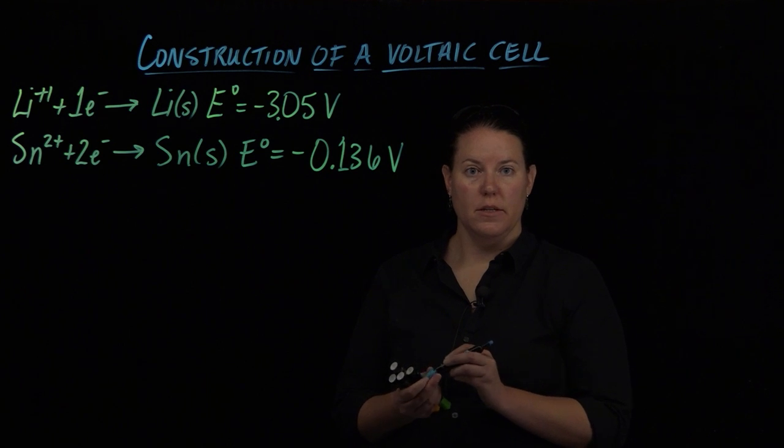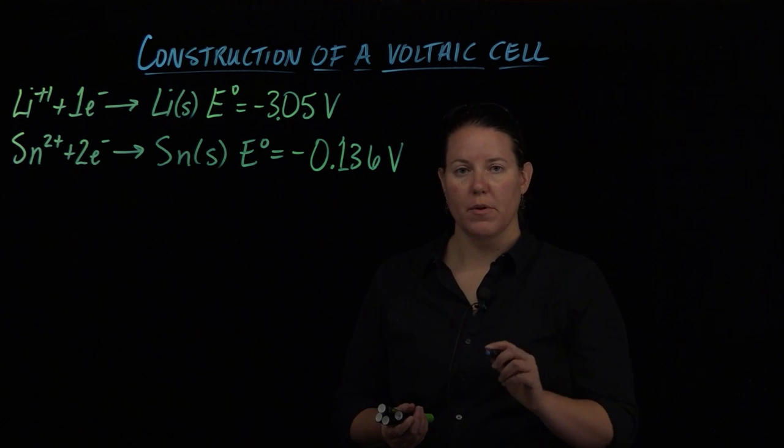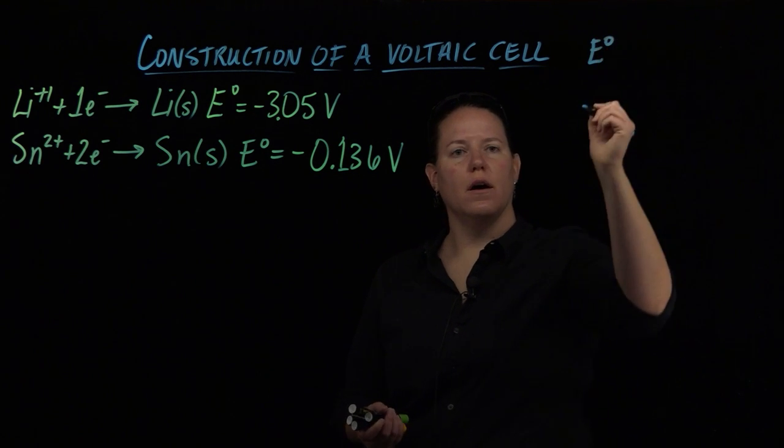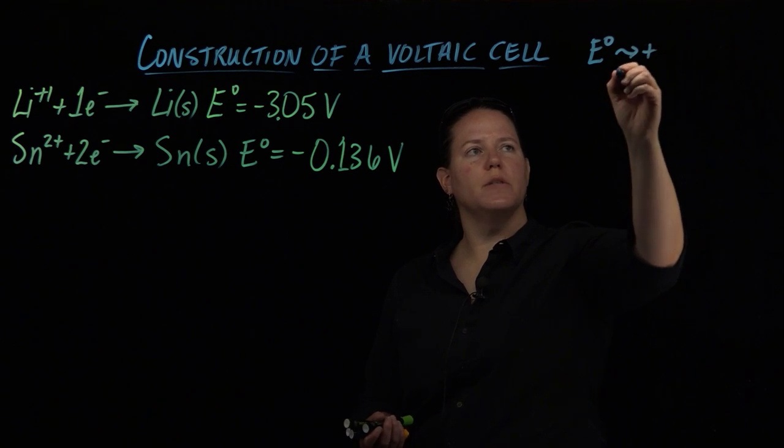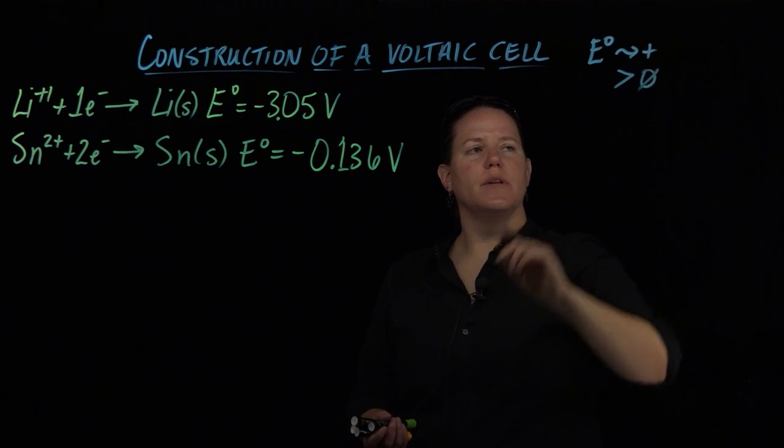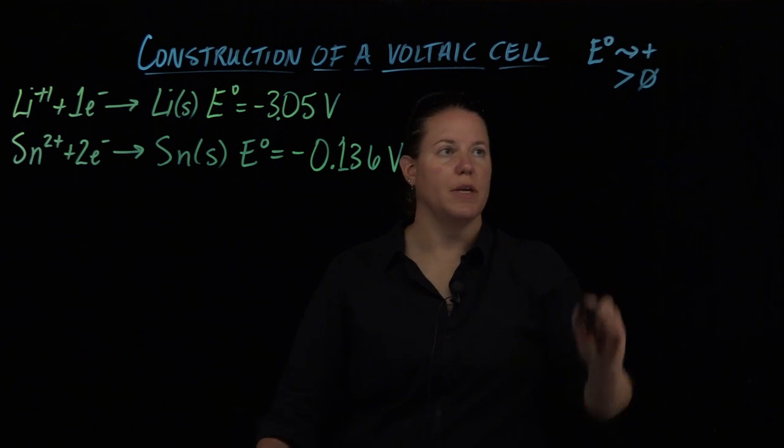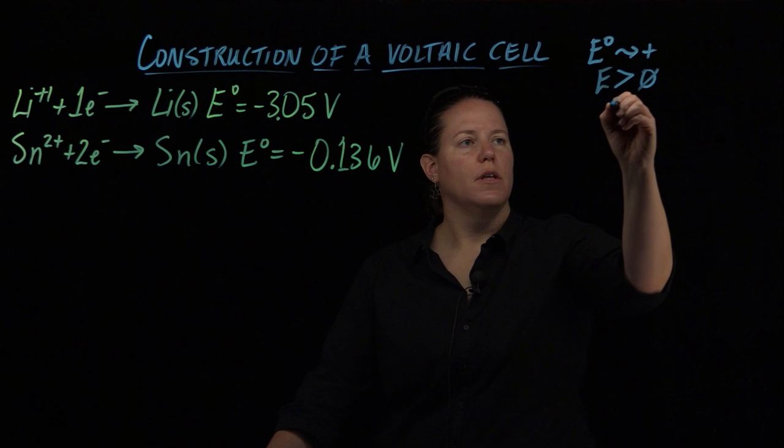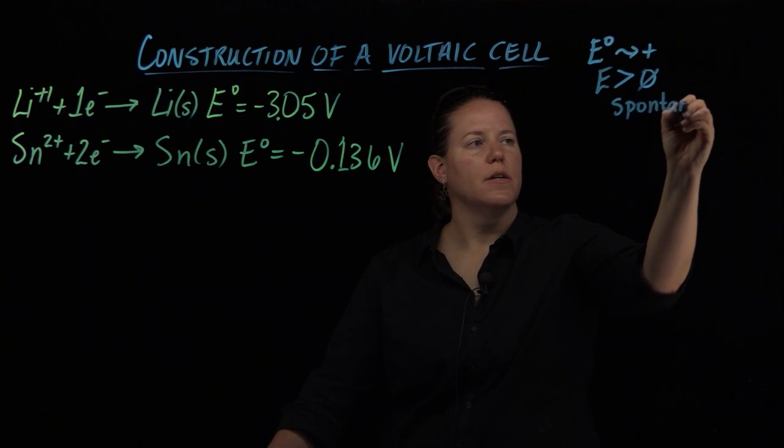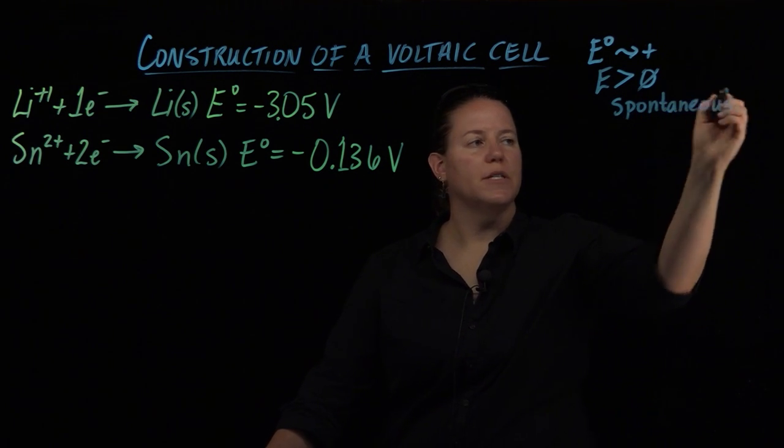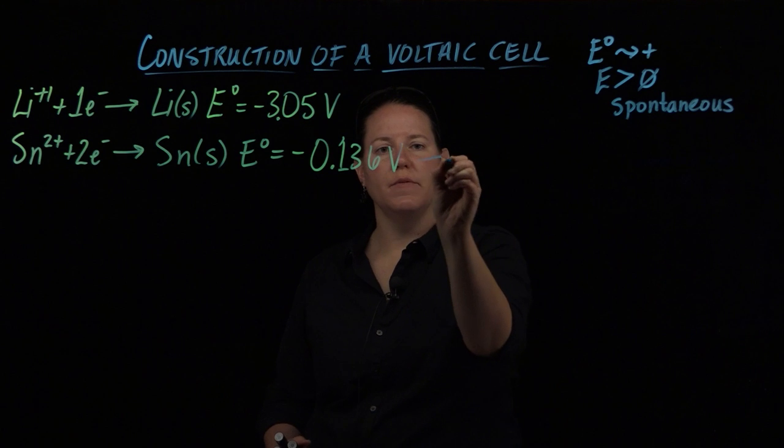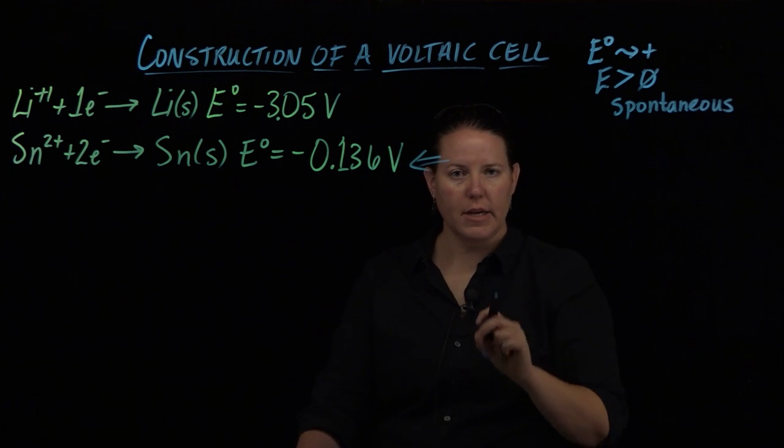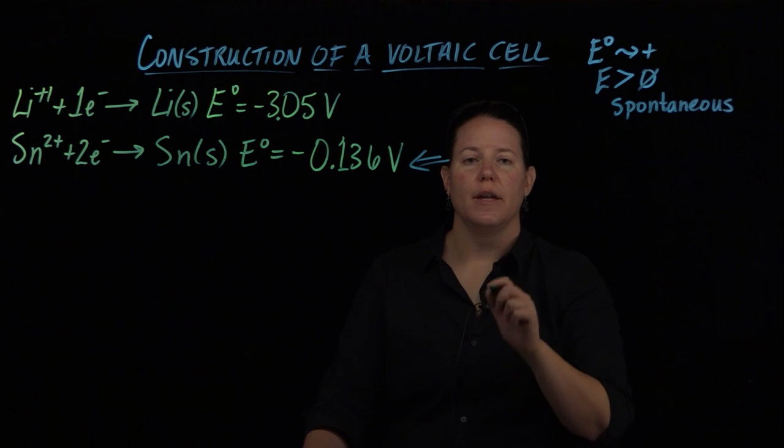And the way we decide that is the more positive number. Remember E°, the cell potential, we want to be a positive number. We want it to be greater than zero, and the reason why is because then it would be spontaneous. If E is greater than zero, then we have a spontaneous reaction. As you look at these two, you're going to compare the two and pick the more positive number. The more positive number is spontaneous as written, which means that indeed you would have that as the cathode.